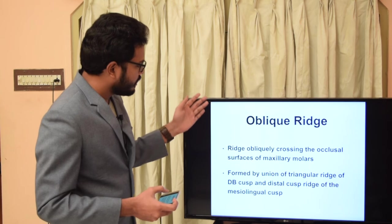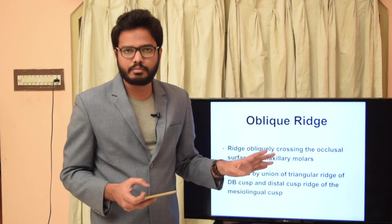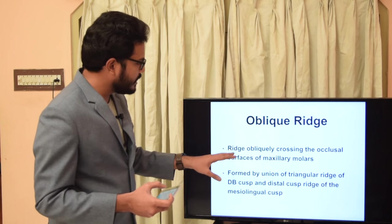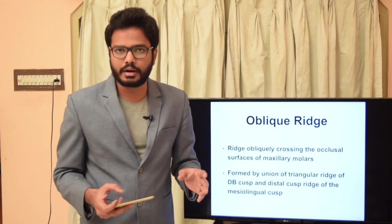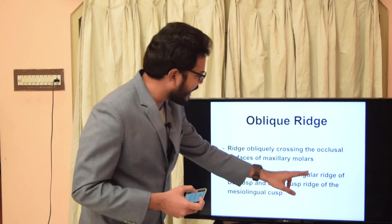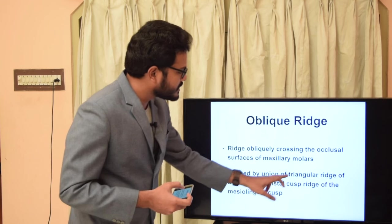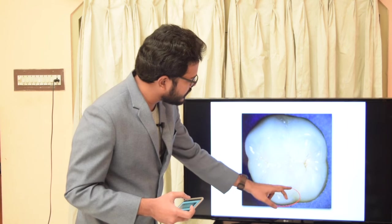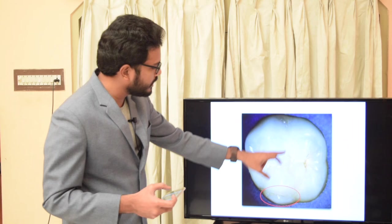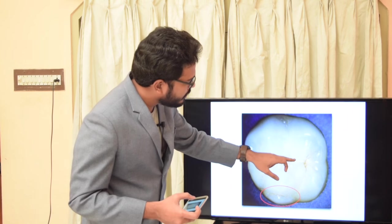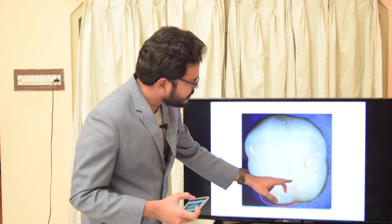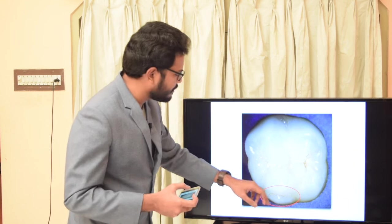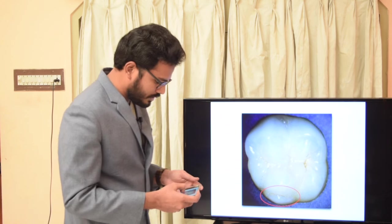The oblique ridge crosses the occlusal surface of maxillary molars obliquely. It's formed by the union of the triangular ridge of the distobuccal cusp and the distal cusp ridge of the mesopalatal cusp. The oblique ridge is usually seen in maxillary first molars. The extra prominence near this ridge is the cusp of Carabelli, representing the fifth cusp.